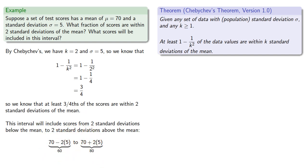What scores are actually going to be in this interval? Since these are the scores within two standard deviations of the mean, this interval will include scores from two standard deviations below the mean — that's 70 minus 2 times 5 — to two standard deviations above the mean — that's 70 plus 2 times 5. In other words, the scores from 60 to 80.